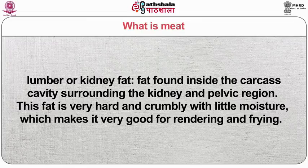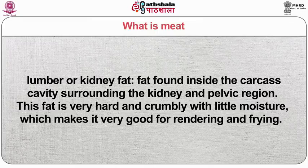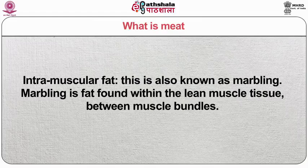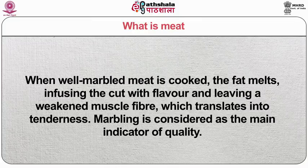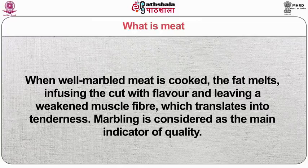Lumber or kidney fat is fat found inside the carcass cavity surrounding the kidney and pelvic region. This fat is very hard and crumbly with little moisture, which makes it very good for rendering and drying. Intermuscular fat is fat found between muscle groups and is used to help guide the butcher between muscle cuts. Intramuscular fat, also known as marbling, is fat found within the lean muscle tissue between muscle bundles. When well-marbled meat is cooked, the fat melts infusing the cut with flavor and leaving a weakened muscle fiber, which translates into tenderness.